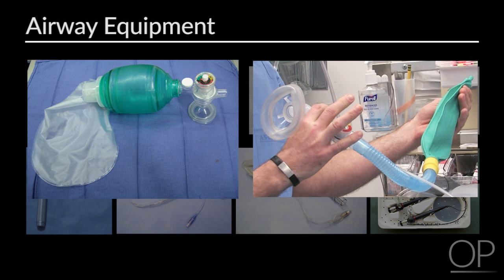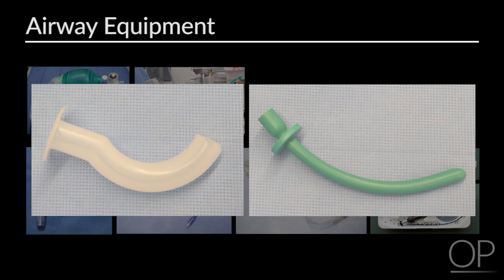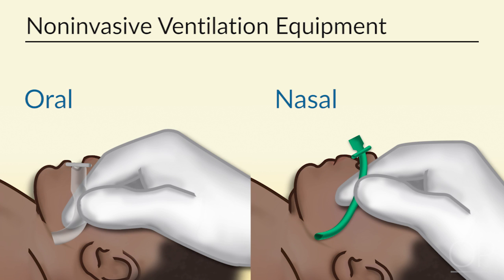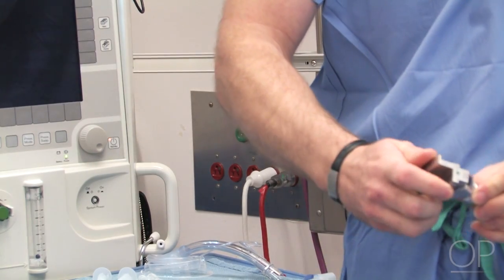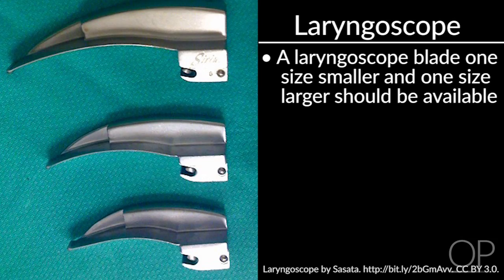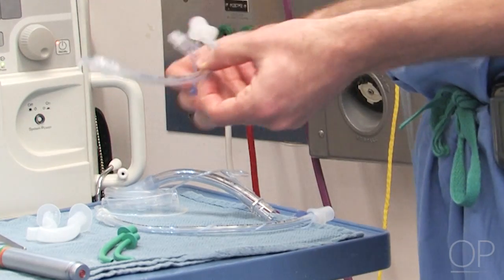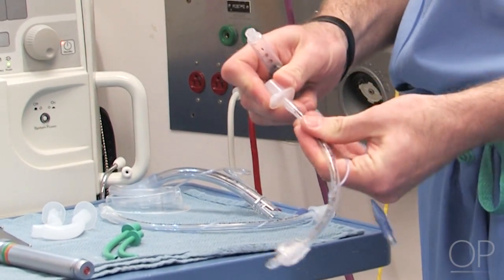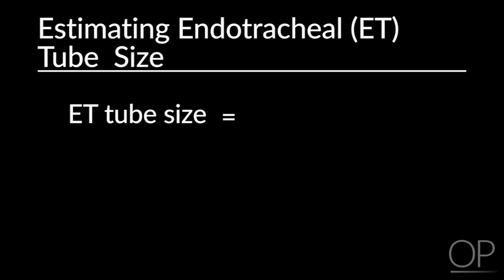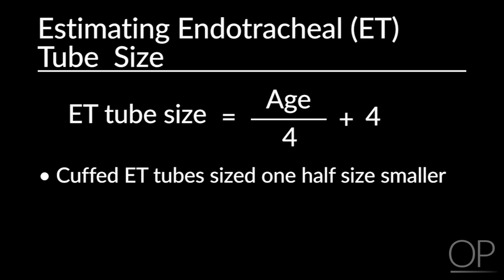An Ambu bag or Mapleson circuit must be available and inspected for proper function. Oral and/or nasal airways appropriately sized for your patient should be available; size can be approximated by comparing the device to the length between the patient's mouth or nose and the angle of the jaw. Laryngoscopes must be checked to ensure proper functioning of the light source, with blades one size smaller and one size larger also available. An endotracheal tube of appropriate size must be inspected for defects and functioning of the cuff. Endotracheal tube size can be estimated by age divided by 4 plus 4.